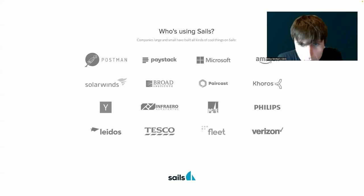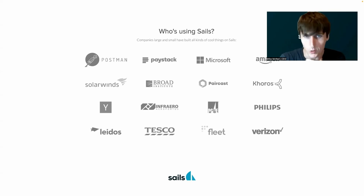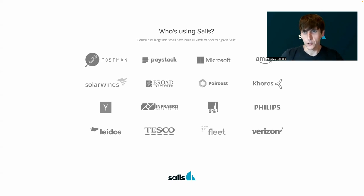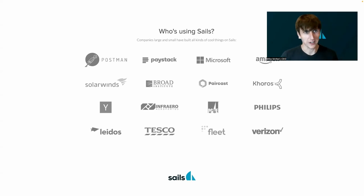This is what's on the Sails homepage right now. Some of these companies like Verizon — I don't know if they're still using it in stores — represent a range of 2013 to 2020 projects. It's companies that are huge and companies that are super small. We've actually had talks from some of these folks at SailsConf in the past, including an engineering manager from Amazon last year. You can check out all the old SailsConf talks from 2021 and 2022.